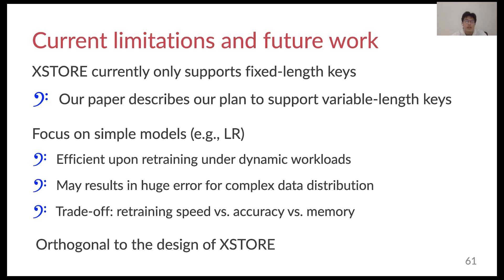There are currently two limitations of XDoor that we plan to address in the future. First, we currently only focus on supporting fixed-length keys, while we describe how to handle variable-length keys in the paper. Second, we currently focus on using simple models such as linear regression for the cache. However, simple models may result in increased error for complex datasets. Using a more sophisticated model such as a neural network may improve the accuracy, but it is not efficient upon retraining. Consequently, we believe there is a trade-off between retraining speed, accuracy, and memory usage when selecting the model for XDoor. We believe model selection is orthogonal to the design of XDoor, which we plan to explore in the future.